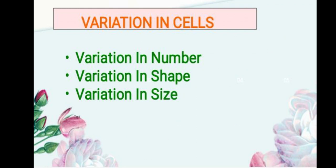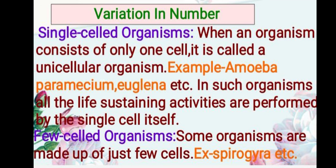Cells can vary extremely in number, shape, and size. Starting with variation in number: when an organism consists of only one cell it is called a unicellular organism — examples include Amoeba, Paramecium, and Euglena. All life-sustaining activities such as respiration and reproduction are performed by that single cell. Next are few-celled organisms, made up of just a few cells — examples include Spirogyra and Volvox.